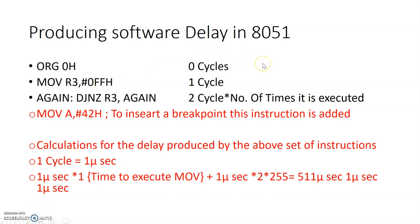Let us start by taking one example. There are a few instructions written here. ORG 00H tells the starting point of the program, so the program starts from 000H. The next instruction is MOV R3, #0FFH — the number FF, which corresponds to 256 in decimal, is being stored in the R3 register. Then we have DJNZ R3, which is a conditional looping instruction.